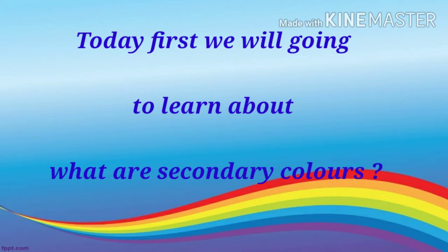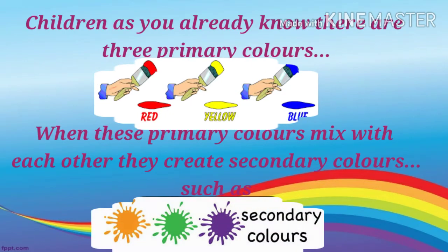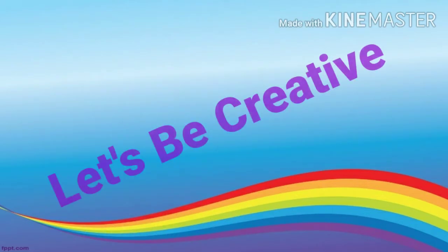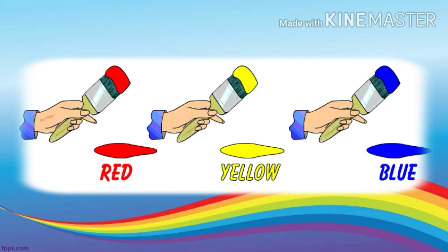Children, as you already know, there are three primary colors. When these primary colors mix with each other, they create secondary colors — such as orange, green, and violet. These are all secondary colors. Let's be creative and create secondary colors with the help of primary colors: red, yellow, and blue.